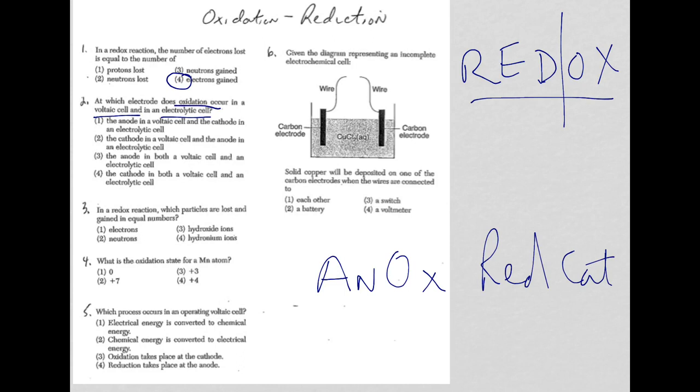And I'm sure maybe your teacher used this as well: ANOX REDCAT. So anode, oxidation occurs at the anode. Reduction occurs at the cathode. So in this case, the anode is both for the voltaic and the electrolytic cell.